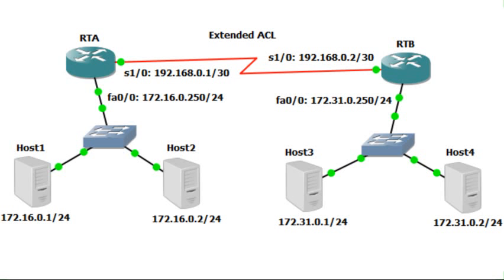In this example we are going to see how to implement an extended access list. Previously we have seen standard access lists. The difference is that a standard access list filters based on source IP address or source network address, while an extended access list filters based on source and destination network address or IP address, source port number, destination port number, and the protocol itself.